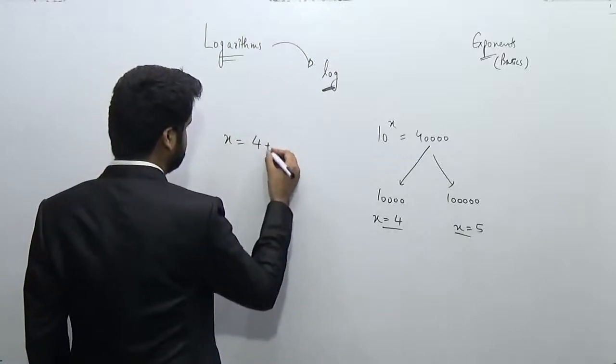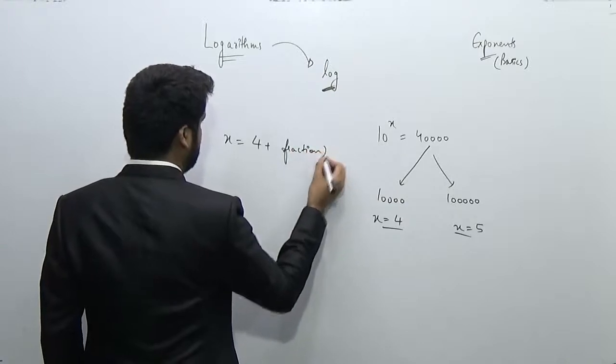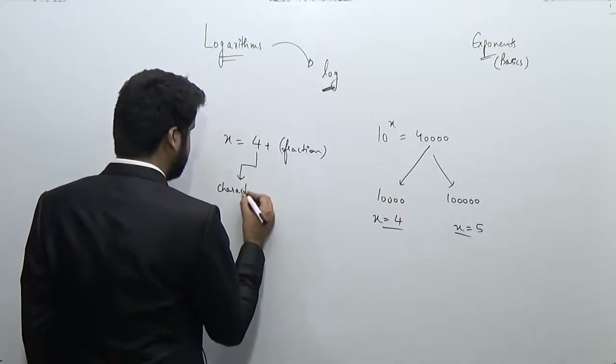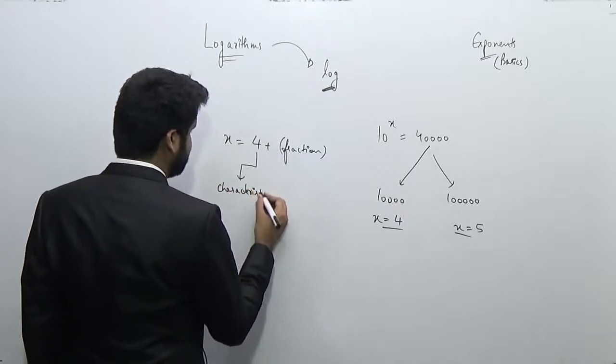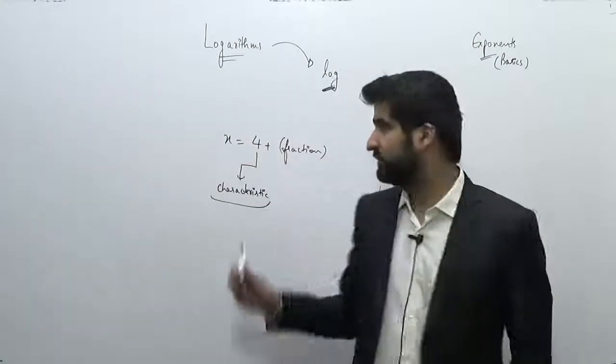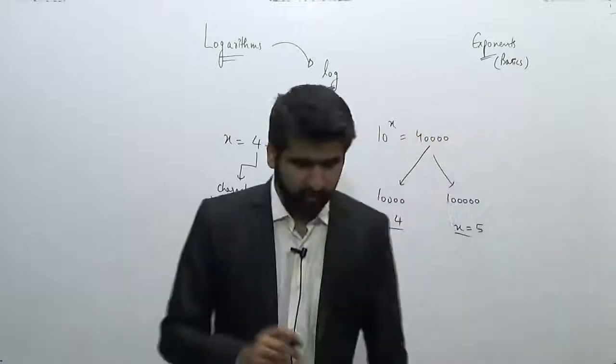And we can say that the value of x is equal to 4 plus some fractional value. So this value will be 4 plus some fraction. Now this integral part is known as the characteristic, and this part is called the mantissa.